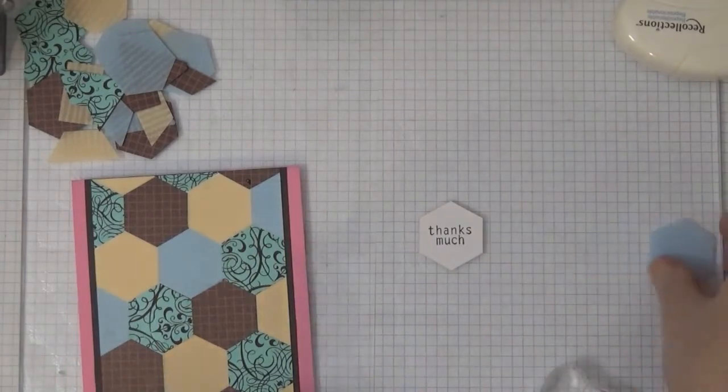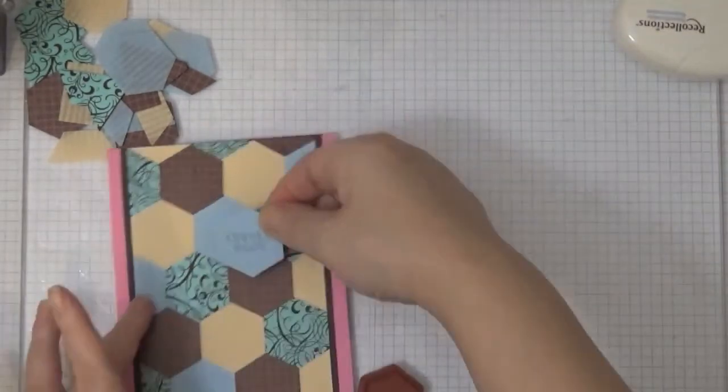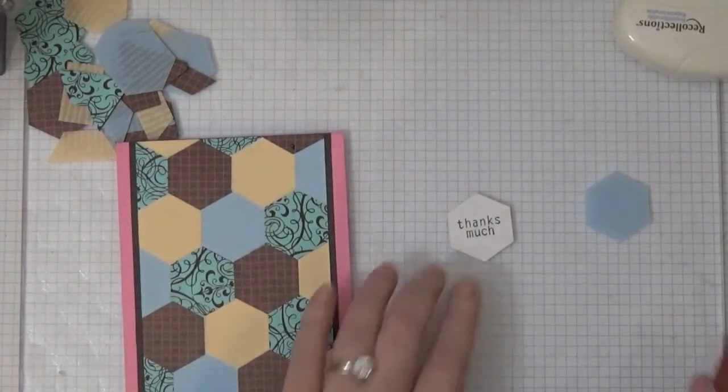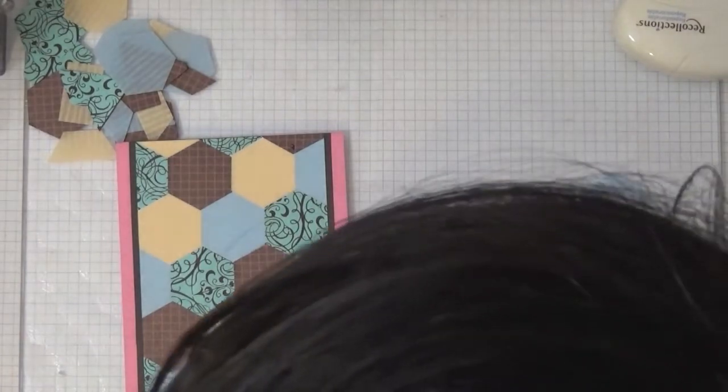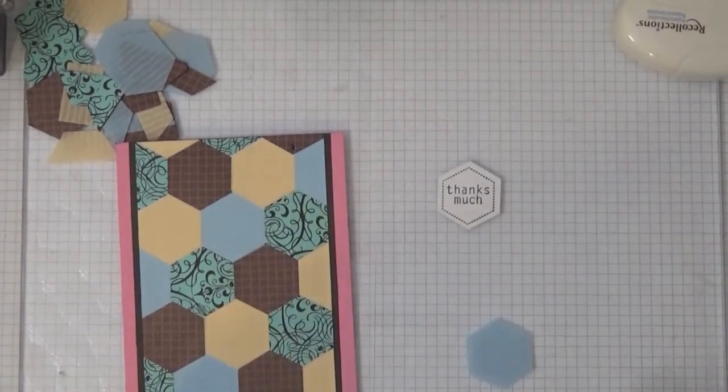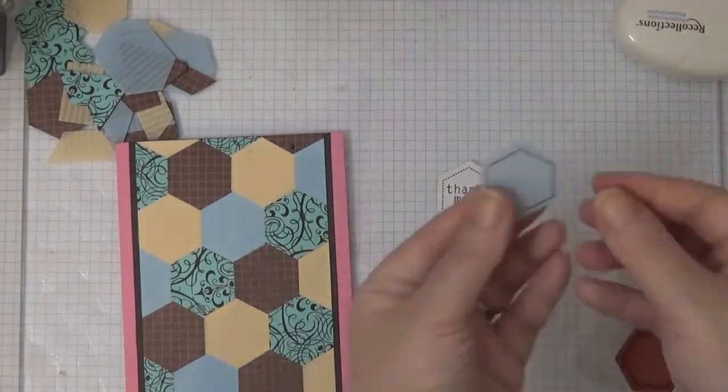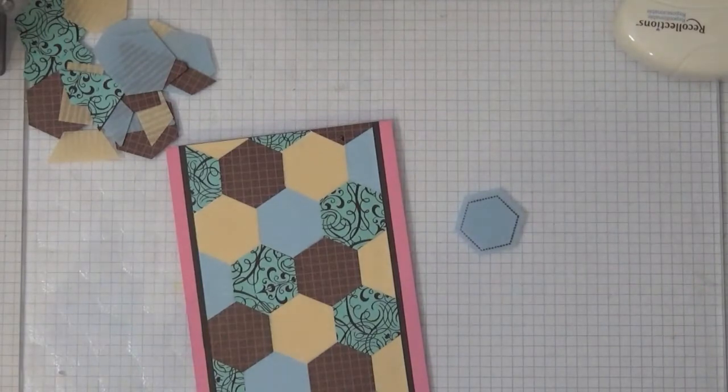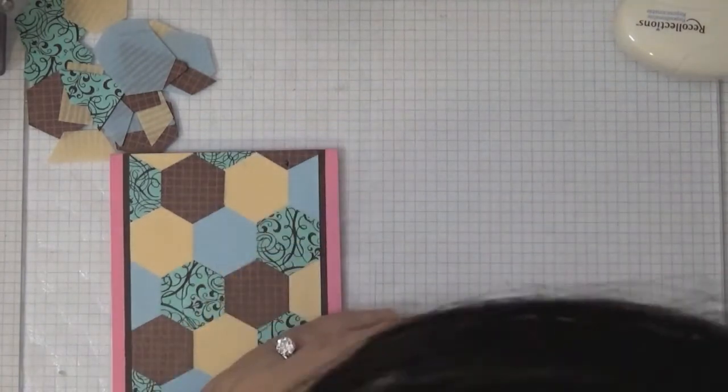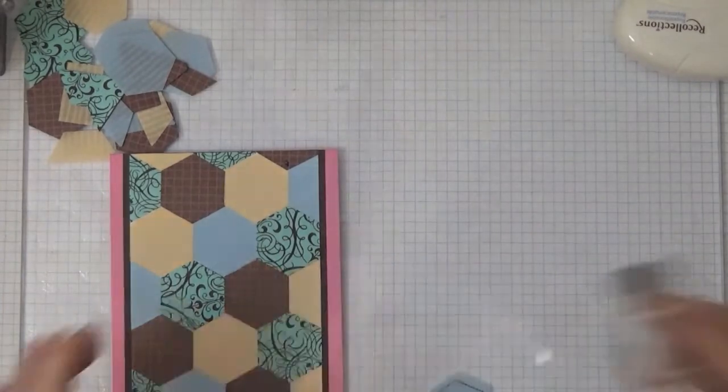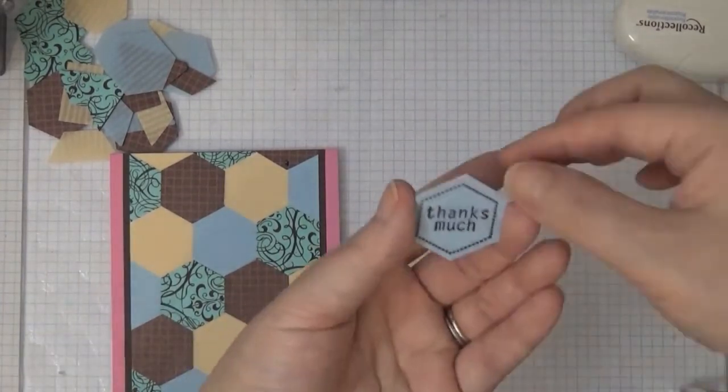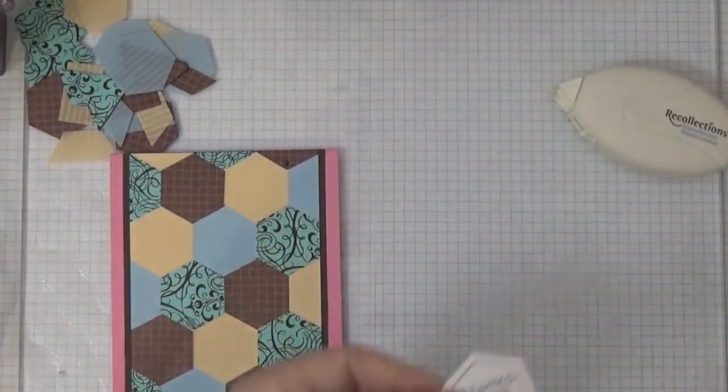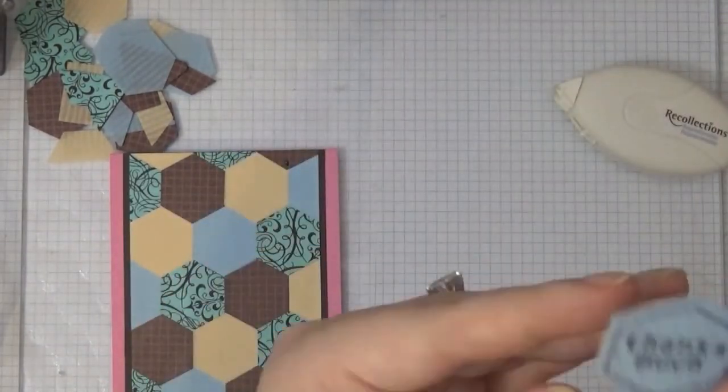I remember that I have all these other shimmery cardstocks so I get one of those and stamp the thanks much and also a little border around that hexagon, which is Stampin' Up's stamp set that coordinates with this punch. I'm going to stamp that exact same thing onto one of the shimmery cardstocks.